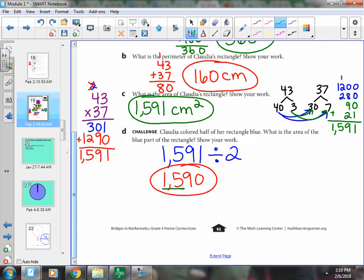Okay? So half of 1,500, or maybe you could even think, maybe this is better. Half of 1,000 is 500. Half of 500 is 250. And half of 90 is 45.